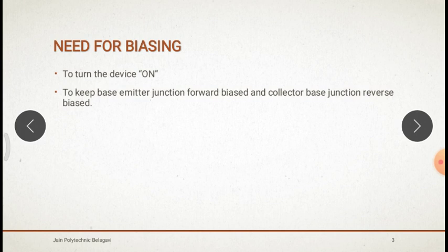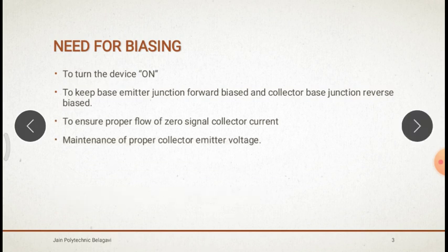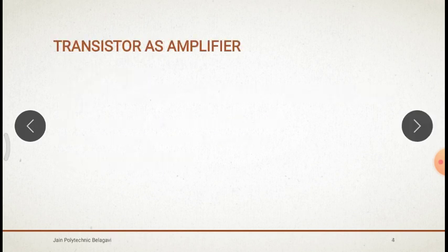The collector side, that is the collector-base junction, should be reverse biased, and we have to connect the polarities of the DC supply accordingly. We also need biasing to ensure the proper flow of zero-signal collector current, maintenance of proper collector-emitter voltage VCE, and stabilization of the operating point. For proper amplification, we have to choose the right voltage and current values, and the operating point should be stable — it should not vary with temperature or atmospheric variations.